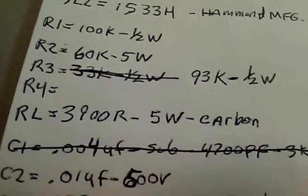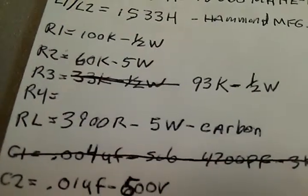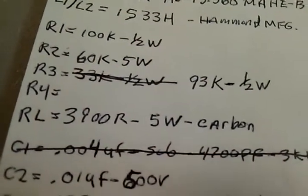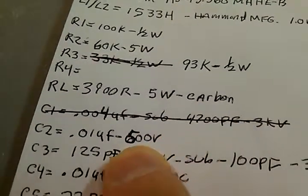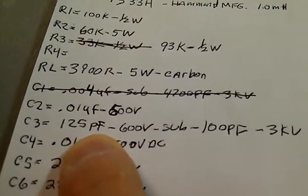We never did put a resistor load on this thing. The load resistance of that tube is about 3900 ohms. Now you want to put a carbon resistor or two, not a wire wound.